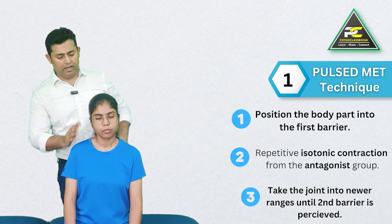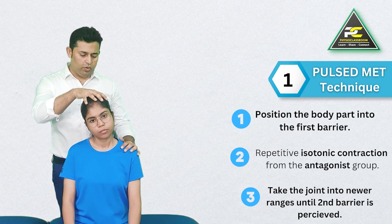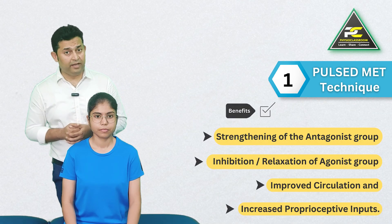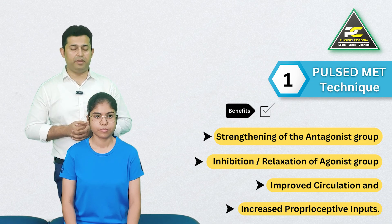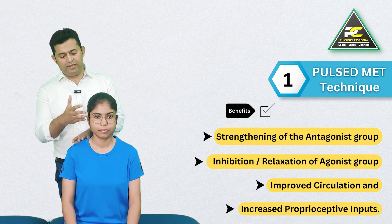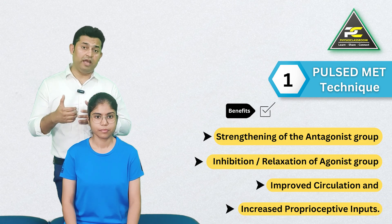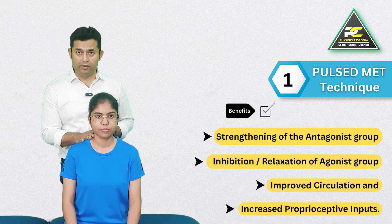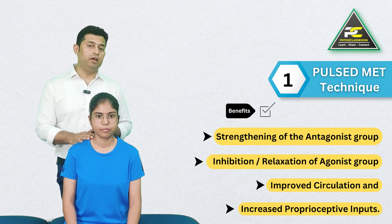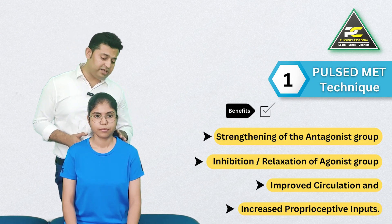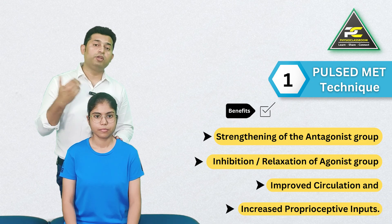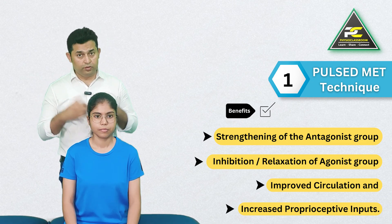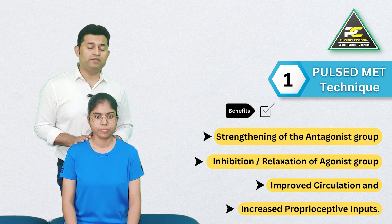With pulsed MET, the therapist intends to achieve toning and strengthening of the antagonist group of muscles, as well as an inhibitory or relaxation effect on the agonist through reciprocal inhibition. Pulsed MET is also thought to improve circulation and proprioceptive input from the treated body part. The second variation of MET is known as the rapid eccentric isotonic stretch.